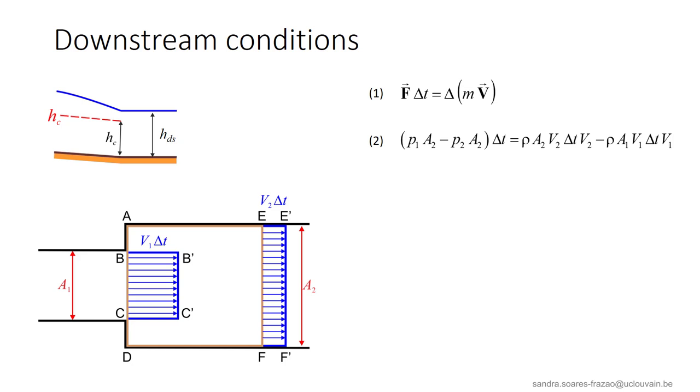We can write the Euler momentum balance on the control volume A, B, C, D, F, E, considering that the only significant forces are the pressure forces, which results in equation 2. The pressure distribution is hydrostatic along AB and CD because the water is almost at rest, and along BC because the flow is parallel. We can express the difference in piezometric head between the two sections as in equation 3, considering a horizontal pipe so that Z2 equals Z1.